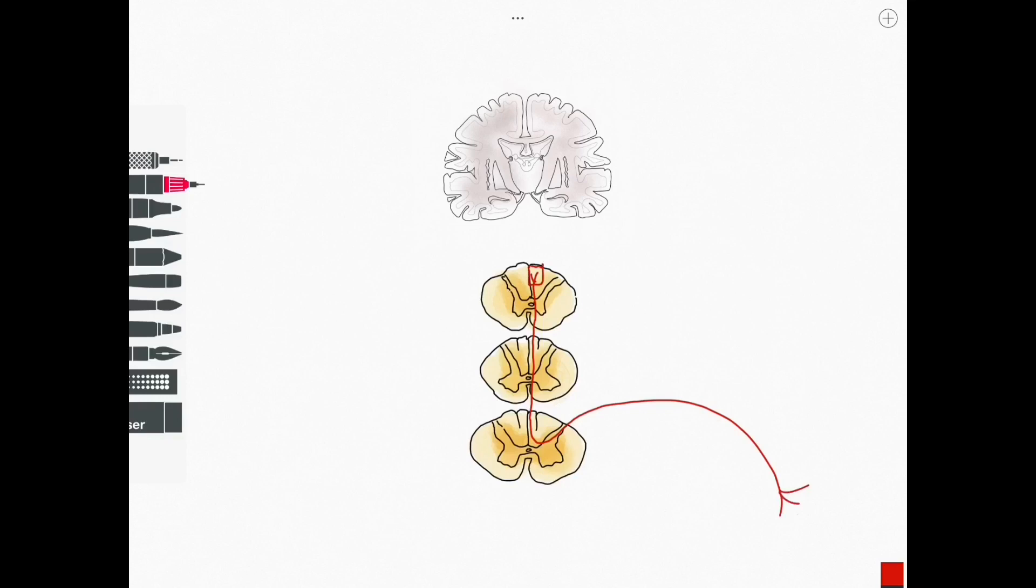We can see here a number of cross sections through the spinal cord leading up to the brain and we can draw on our first order neuron which we can see here in red.